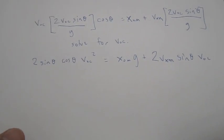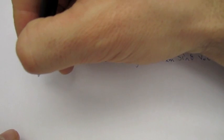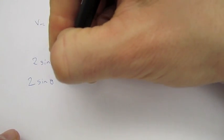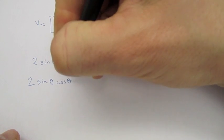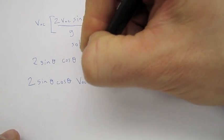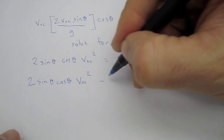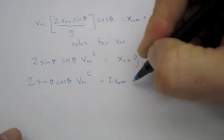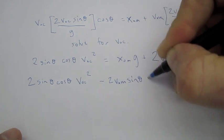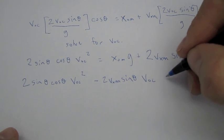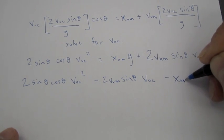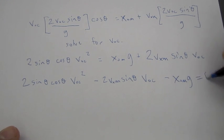So, rearranging to make it look like a quadratic equation, I get 2 sine theta cos theta, or constants, times V 0 C squared. And then, another constant is 2 V X M sine theta times V 0 C, not squared. And then, the remaining constants is minus X 0 M times G, all equals 0.